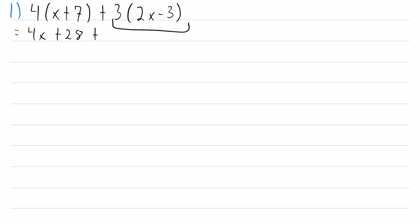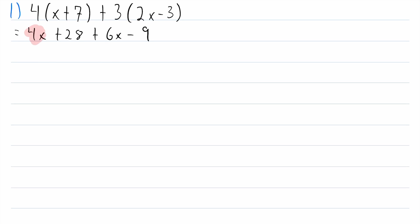Then we've got to handle the second part — we'll need to use the distributive property again, because we've got three getting multiplied by a sum in parentheses. Three multiplied by 2x is 6x, and three multiplied by negative three is minus nine. Now we can add like terms: 4x and 6x, and then the two constants, 28 and minus nine. Adding 4x and 6x gives us 10x, and adding 28 and negative nine gives us 19.